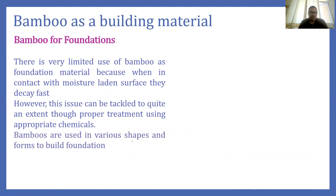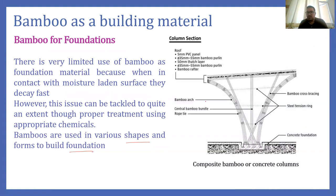Bamboo is used in various shapes and forms to build foundations. Here you can see a good example — the lower part is of concrete, bamboo is embedded within the concrete, and these curved parts and cross bracings are basically of bamboo. Similarly, the roofing material can also be used very effectively within the foundation along with the concrete.